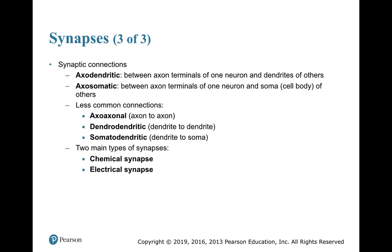Here they are microscopically. You can have axodendritic synapses between an axon terminal of one neuron and the dendrites of another; axosomatic synapses between an axon and a cell body; axoaxonal synapses, which are less common; dendrodendritic synapses, dendrite to dendrite; or somatodendritic synapses, dendrite to cell body.